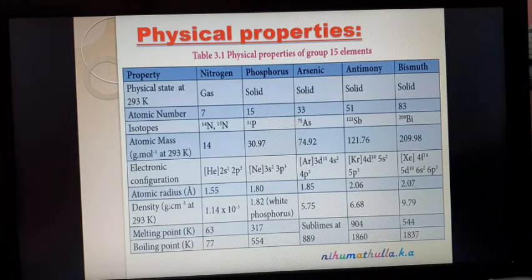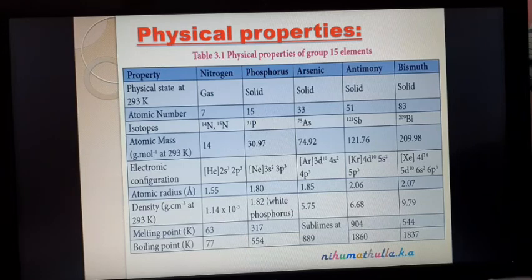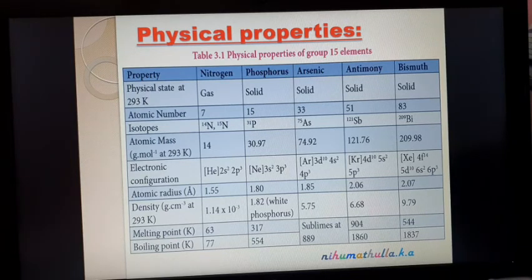Atomic radius goes on increasing down the group, but for the last three elements there is only a marginal difference due to the poor shielding effect of d and f electrons. Density: nitrogen is a gaseous substance, so its density is very small — 1.14 × 10⁻³ — giving approximately 0.0000114. All other elements are solid, so density goes on increasing.